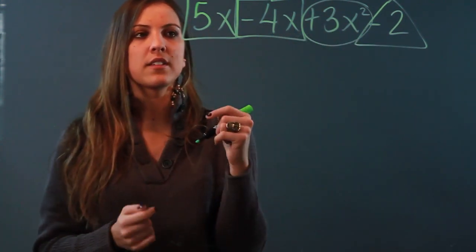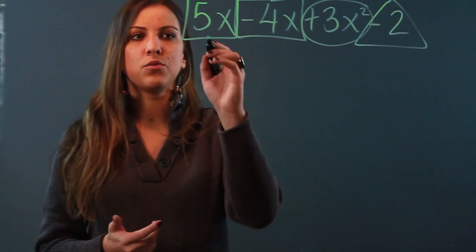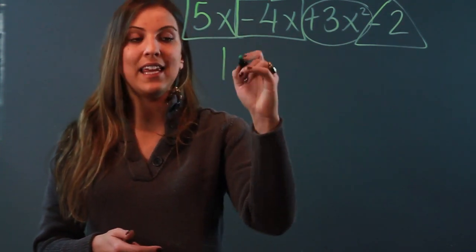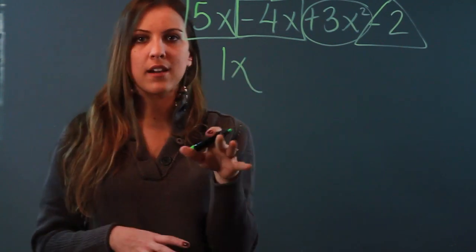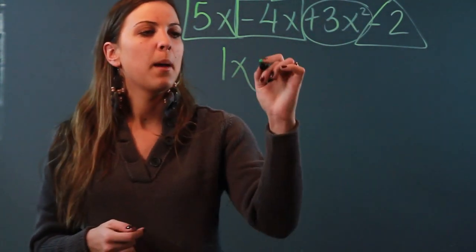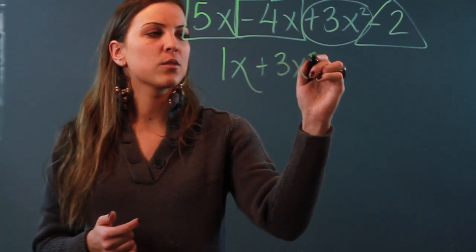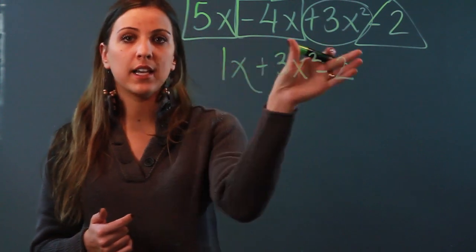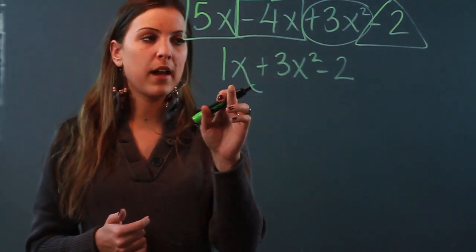I have 5x - 4x. The way that you add or subtract is you just combine the coefficients. So 5 - 4 is 1, and keep your variable as it was. Don't add or subtract any exponents from it, just leave it. 1x + 3x² - 2. Those were the only things I could combine in this case.